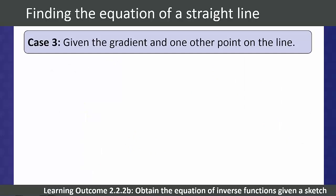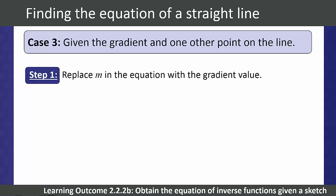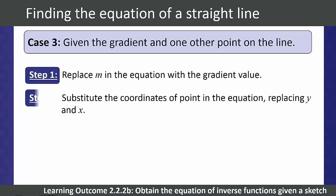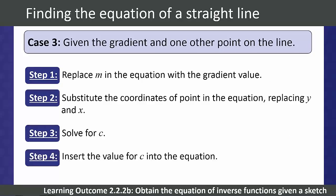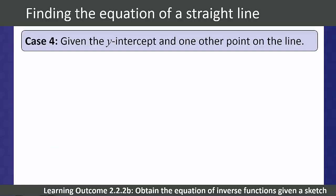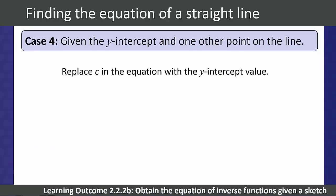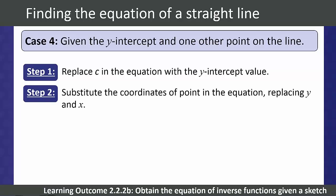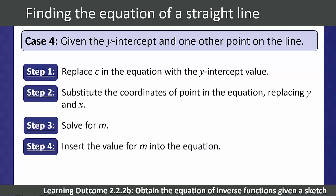Case 3: students are given the gradient and one other point on the line. We substitute the gradient for m, substitute the given point to solve for c, then insert c to find the final equation. Similarly for Case 4: given the y-intercept and another point on the line, we substitute the y-intercept for c, substitute the other point and solve for m, then insert m to find the final equation.